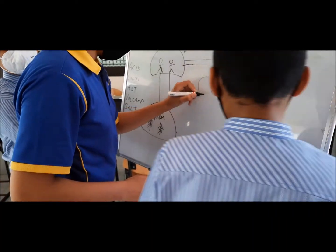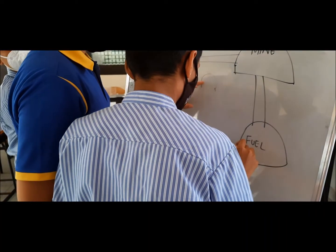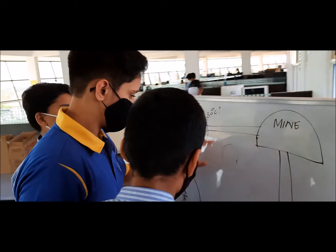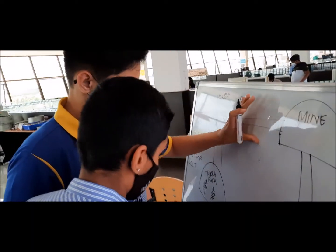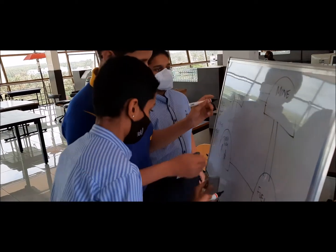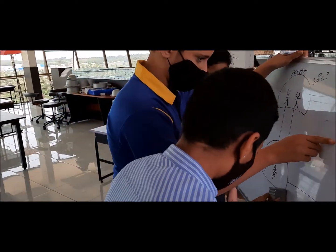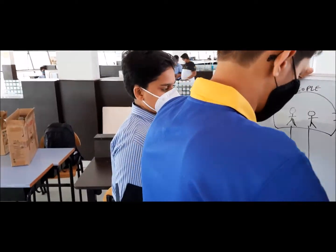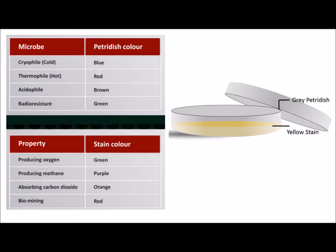We decided on not using the names of actual organisms or celestial bodies, as that would increase the complexity of the topic. Instead, we decided to color-code the properties of the extremophiles.